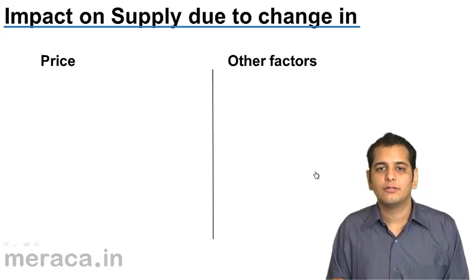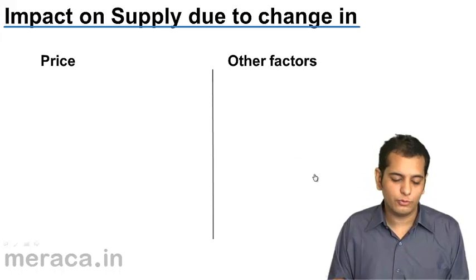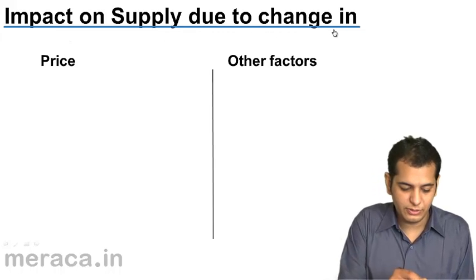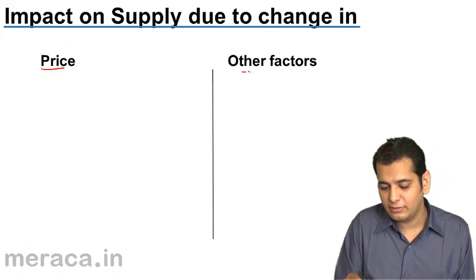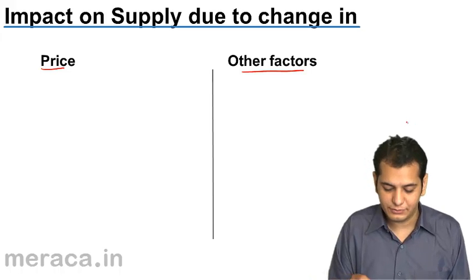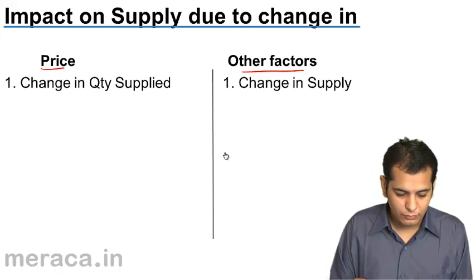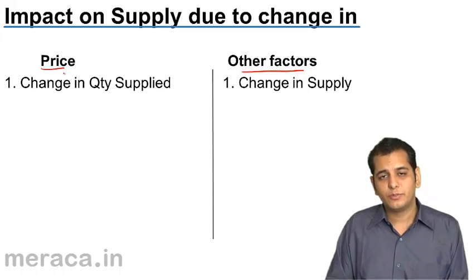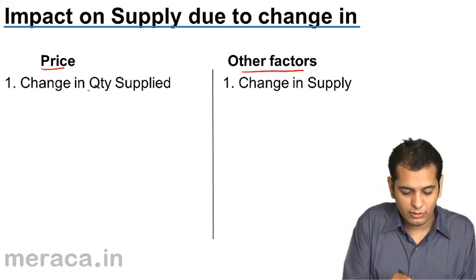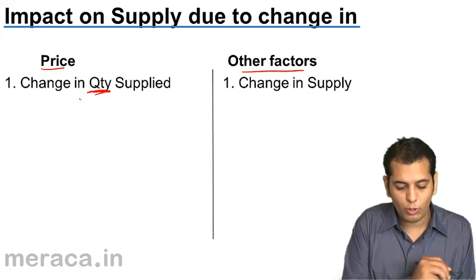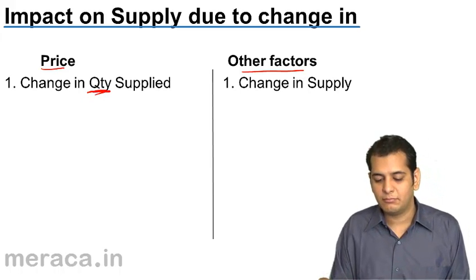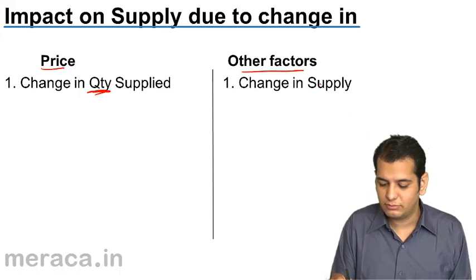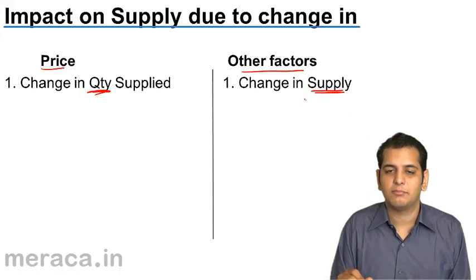Now, let's see the distinguishing features of both: the impact of supply due to change in price and due to change in other factors. First, when supply changes because of price, we call it change in quantity supply. But when supply changes because of some other factors, we call it change in supply.